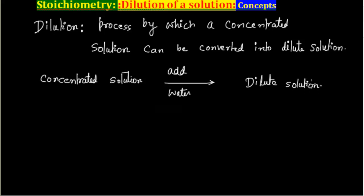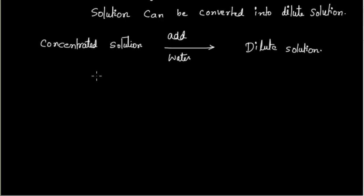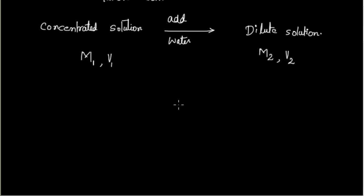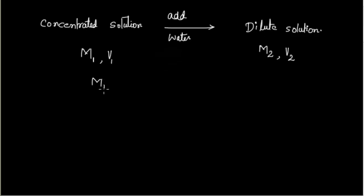Let us say we have a concentrated solution of molarity M1 and volume V1. If we add water, the final concentration becomes M2 and the final volume becomes V2. Here M1 is the molarity of the solution before dilution.